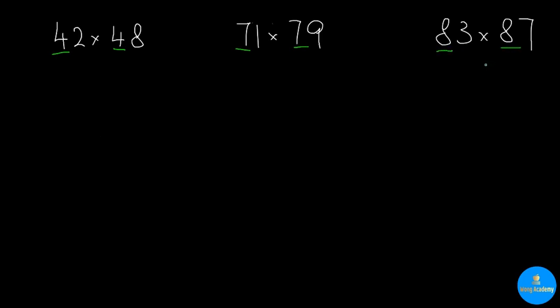But what you may not notice is that the last digits must add up to be 10. For example, 2 plus 8 is 10, 1 plus 9 is 10, 3 plus 7 is also 10. Alright, how do we actually do the calculation for each group?